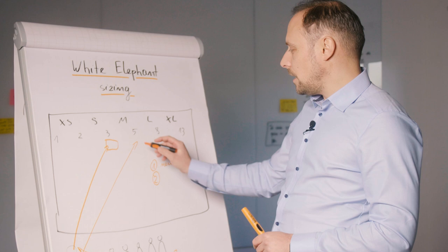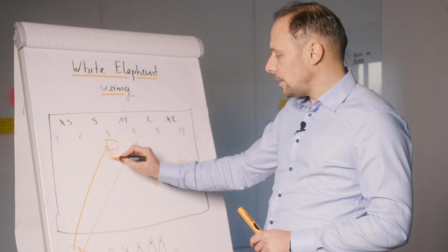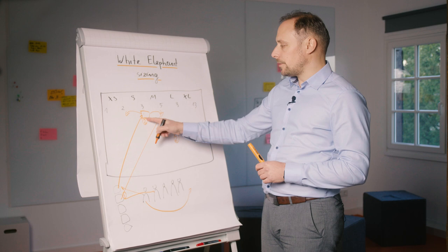The second possibility is to take an already estimated story from the board and move it to one of the other columns, depending on how the person feels the size should be adjusted.